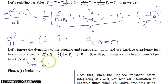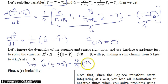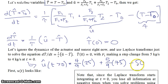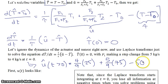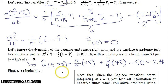What that means is u-hat at t greater than 0 is equal to (4/9) times 25 plus (5/9) times 75 minus 50. This is: (f1 over f1+f2) times T1 plus (f2 over f1+f2) times T2 minus T0, which gives u-hat equals 2.78.